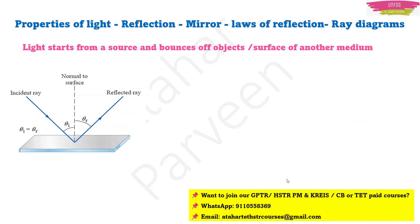What is reflection? Light starts from a source and bounces off objects — or you can say that light traveling in one medium bounces off when it is incident on the surface of another medium. This is known as reflection. Here you can see a plane slab; one light ray is initially falling on it and then it is getting reflected.